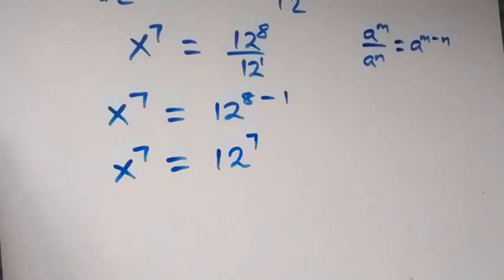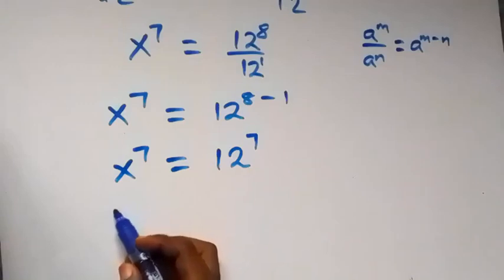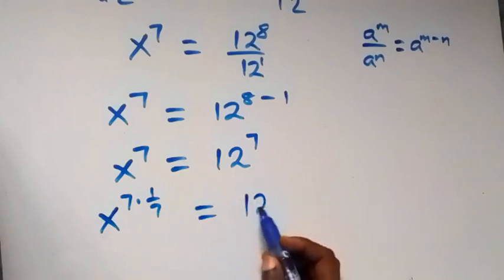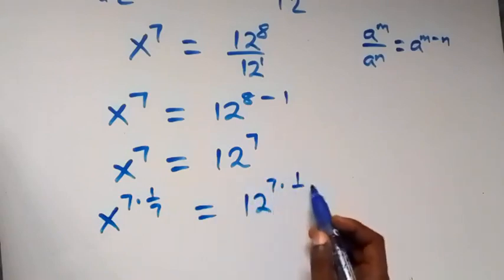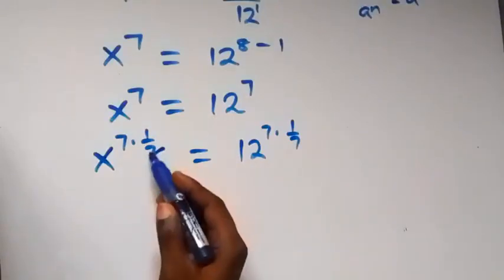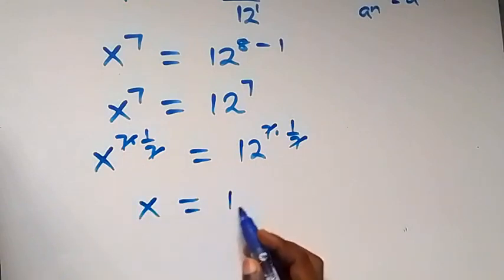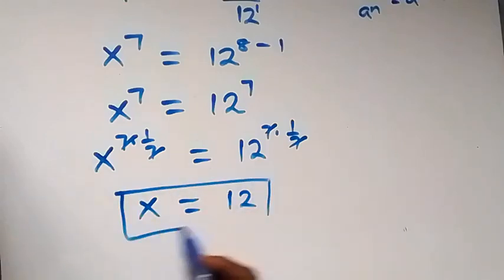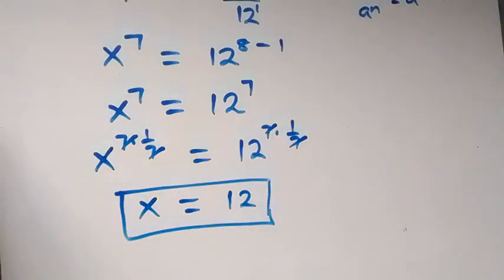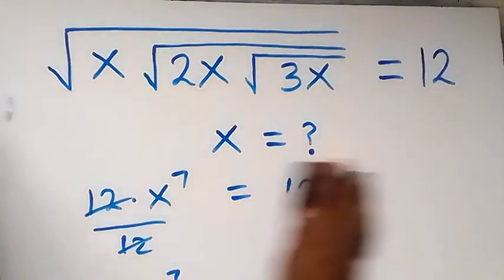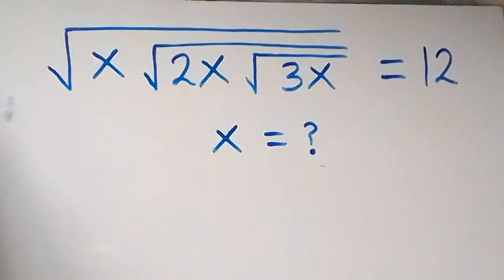From here we raise both sides to the power of 1 over 7. So we have x raised to power 7 times 1/7, equals 12 raised to power 7 times 1/7. The 7 and 1/7 cancel each other, and we have x equals 12. We can check in order to confirm if this solution satisfies the given problem — let's substitute x equals 12.